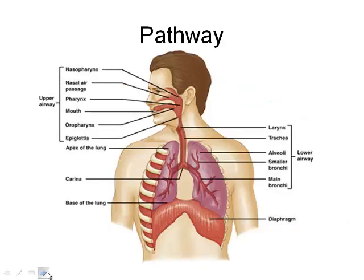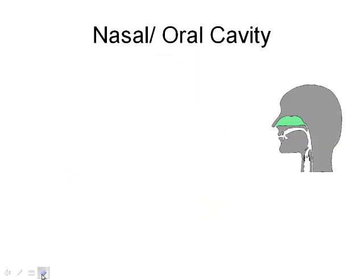Here's a picture — you have the same one in your notes, so you may want to pause and fill in the blanks. You can see all the major structures: epiglottis, larynx, pharynx — make sure you know those. Some others you don't need to know, and the lungs are pretty self-explanatory.